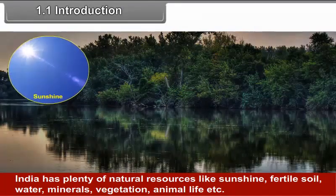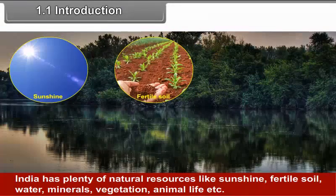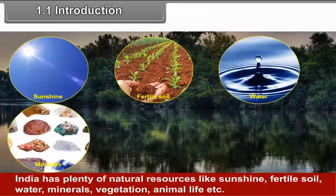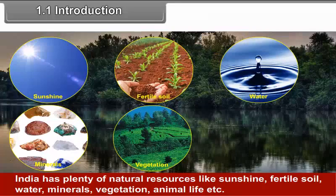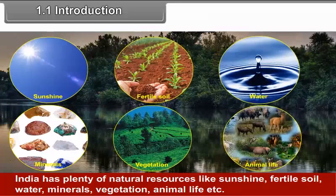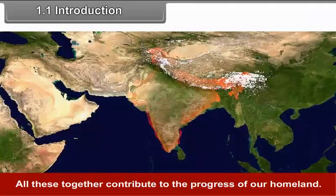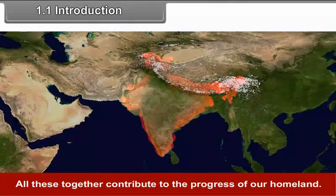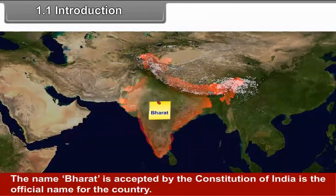It spreads from the snowy ranges of the Himalayas in the north to Kanyakumari in the south. India has plenty of natural resources like sunshine, fertile soil, water, minerals, vegetation, animal life, etc.